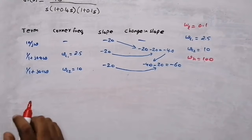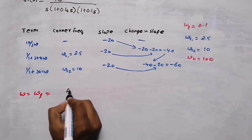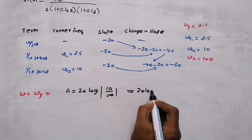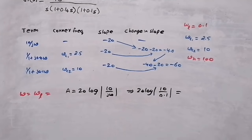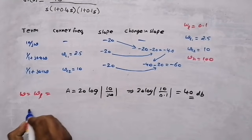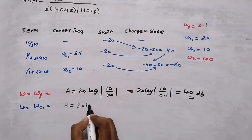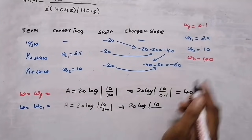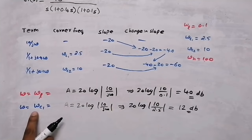Now find magnitudes. The magnitude equation for the first two omegas is: A = 20 log|10/jω|. At ω = 0.1: 20 log(10/0.1) = 40 dB. At ω_c1 = 2.5: 20 log(10/2.5) ≈ 12.04 dB, which we approximate as 12 dB.